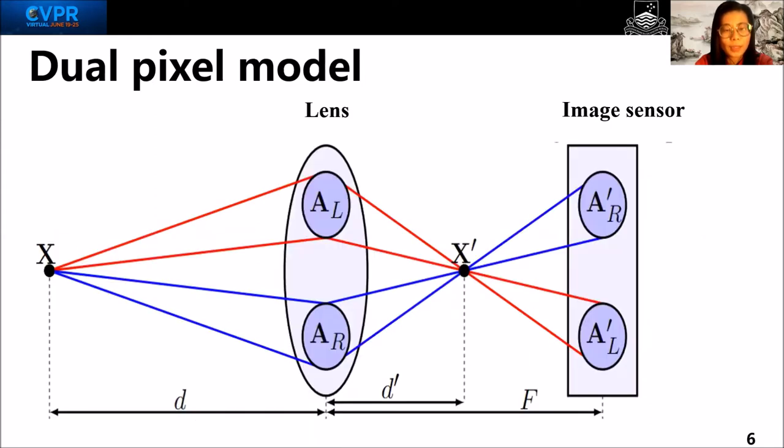More abstractly, rays from a point X in the scene at depth D pass through the left aperture AL and are focused at a point X' at depth D'.